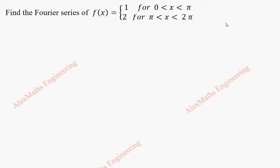Hi students, this is Alex. In this video we are going to find the Fourier series for the given function f(x), which is made up of two parts: it is 1 on the interval from 0 to π, and it is 2 on the interval from π to 2π.